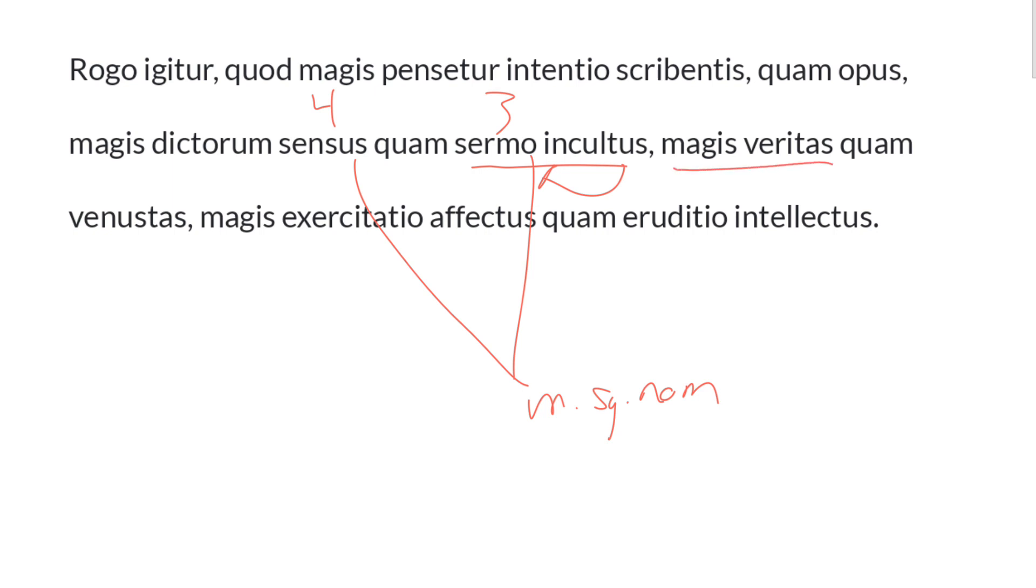That the truth is more valued, again, magis pensetur, here's feminine, singular, nominative, subject, third declension noun, than venustas. It's an inherent charm. This is also feminine, singular, nominative, and also third declension.